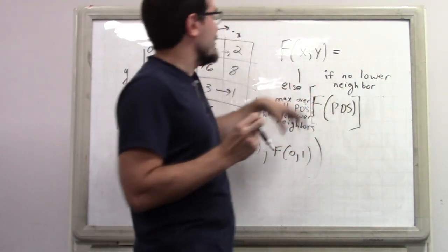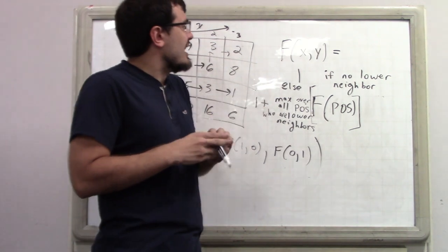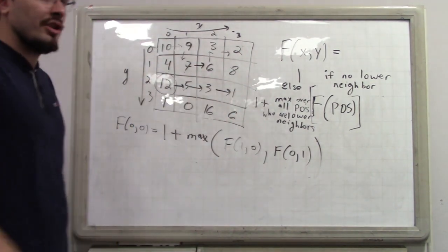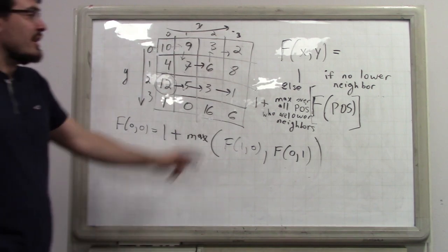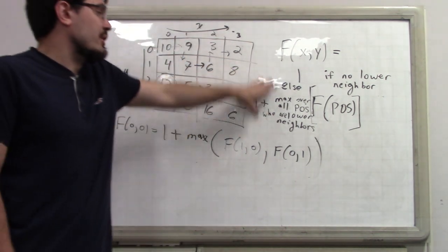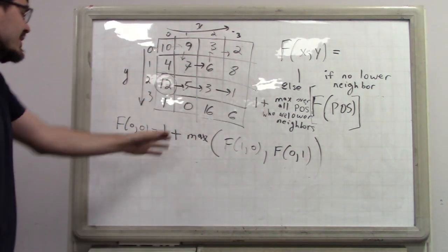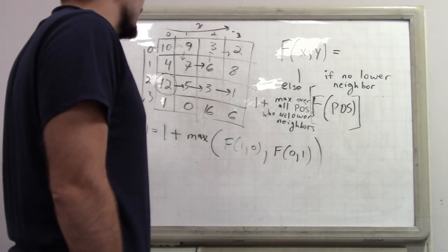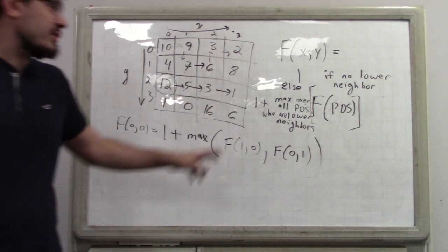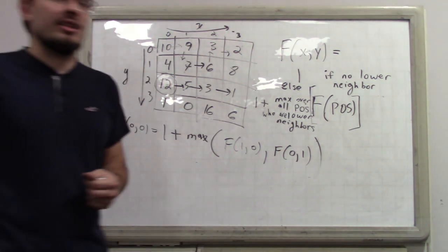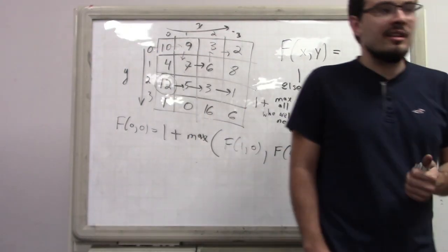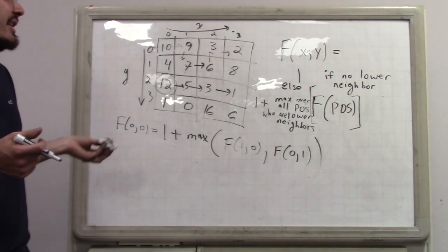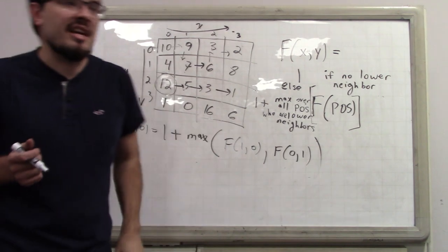You have to sort the matrix and start with the smallest numbers first. The idea is you fill in the numbers in order of their size. Why is that correct? Because this equation explicitly only references smaller numbers — to evaluate f(x, y), we take the max over all positions that are lower. So if I evaluate the lowest ones first, by the time I evaluate a higher one, I definitely have access to f for all positions that are lower.